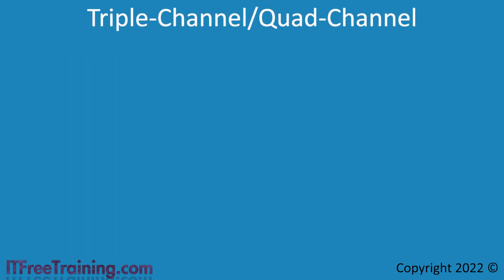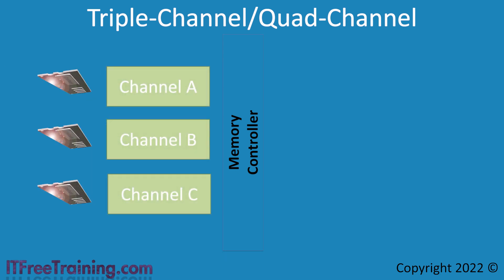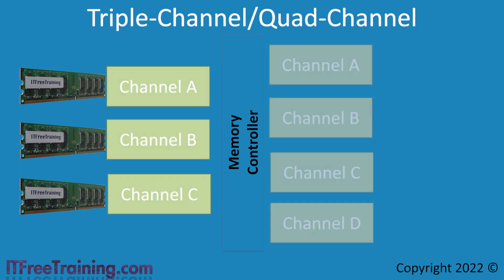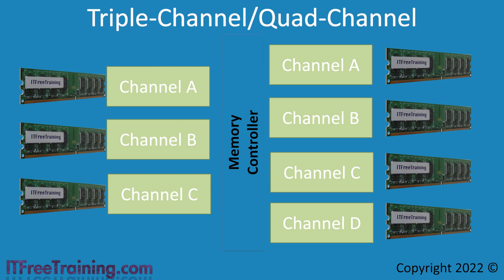So what is triple or quad channel? Triple channel is essentially when the memory controller uses three memory modules at the same time. Quad channel is when the memory controller can use four memory modules at the same time. The same rules apply — memory modules need to be of the same memory size and specifications, however speed and brand can vary.